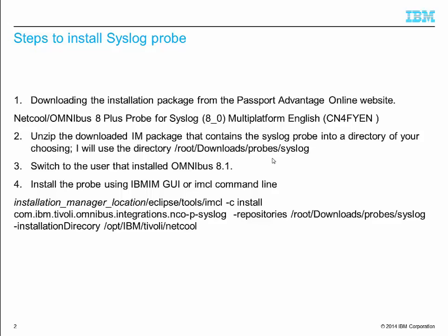First, you need to download the syslogprobe for Omnibus 8.1 package. The latest version of syslogprobe is 8.0. The current part number is cm4fyen. However, with the new releases, the part number might be changed.